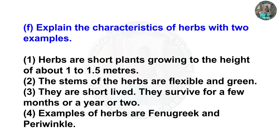Question F — explain the characteristics of herbs with two examples. First: herbs are short plants growing to a height of about 1 to 1.5 meters. Second: the stem of herbs is flexible and green. Third: they are short-lived — they survive for a few months or a year or two. Examples of herbs are fenugreek and periwinkle.